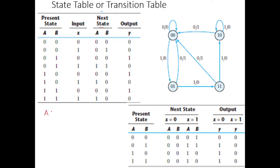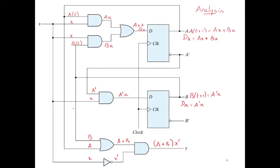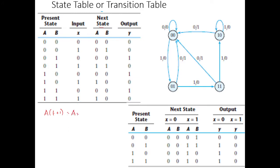For a(t+1) = ax + bx, we substitute values. For example, when a=0 and x=1, the term ax = 0. Similarly, b=0 and x=1 gives bx = 0, so 0 OR 0 = 0, giving a(t+1) = 0. For another combination where ax = 0 but bx = 1, we get 0 OR 1 = 1, giving a(t+1) = 1.